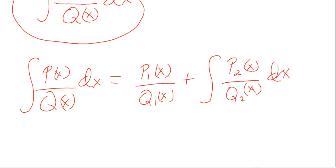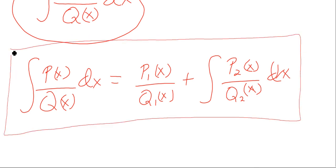So how do we find the functions P1, P2, Q1, and Q2? These are all polynomials. P1 should be a polynomial of lower degree than Q1, while P2 should be a polynomial of lower degree than Q2.